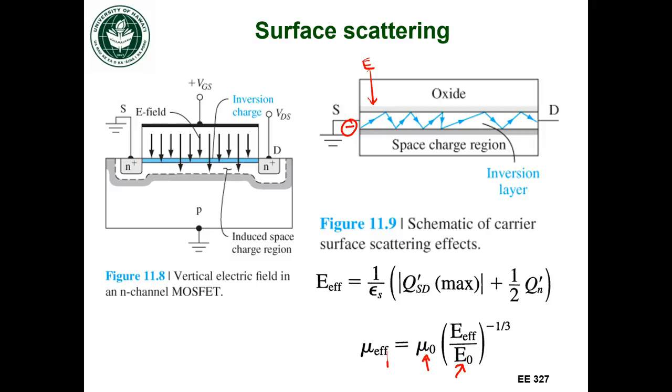So the higher the gate to source voltage, the lower the effective mobility. So my electron is not going to travel as quickly between the source and the drain as we think it will.